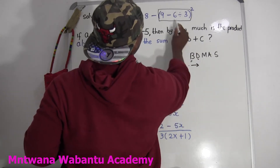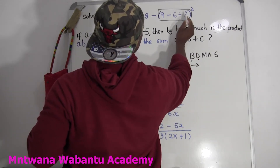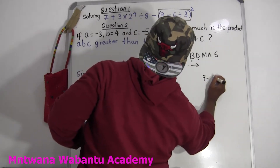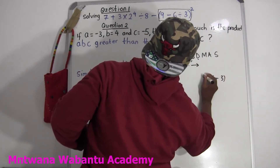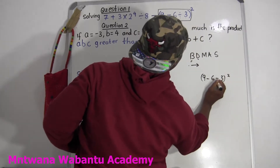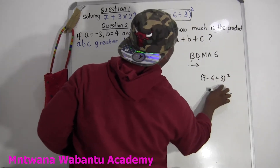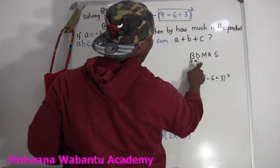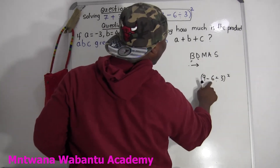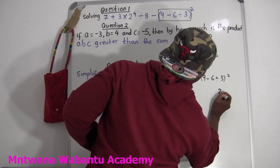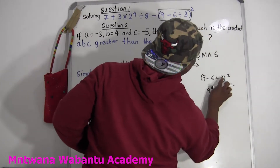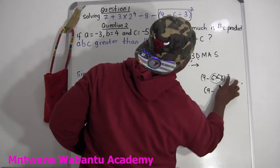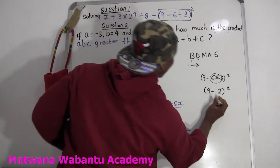So division first: 6 divided by 2 equals 3. So it's like 9 minus 6 divided by 3. We start with this because in the bracket, division comes first. 6 divided by 3, we get 2. So it's like 9 minus 2. That gives us 2, and then we still have a bracket and then a square. 9 minus 2 equals 7.